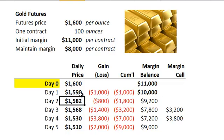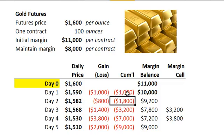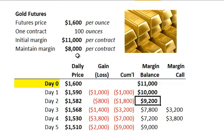Day two, the futures price drops to $1,582. We have another daily loss of $800, so a cumulative loss of $1,800. Now the margin balance is down to $9,200. But again, the key point is that we're still above the maintenance margin, so there is no margin call.